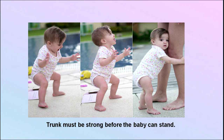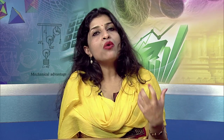The trunk must be strong before the baby can stand. In addition to body dimensions and height and weight, there is also development in primary teeth. By 5 to 6 months of age, 2 teeth erupt in the lower jaw first. By 3 years of age, a full set of 20 teeth — 10 upper jaw plus 10 lower jaw — develops. By 6 to 7 years of age, milk teeth are replaced by permanent teeth. It is very important to understand how the development of primary teeth takes place.